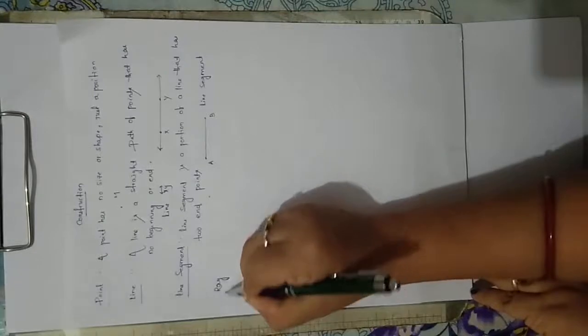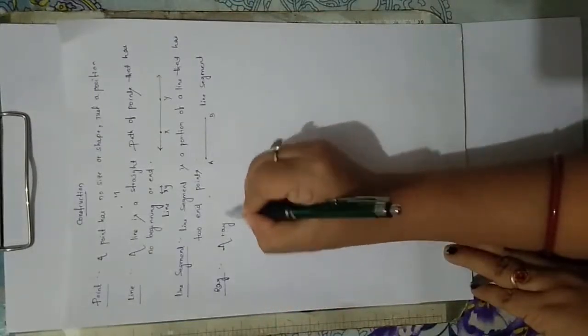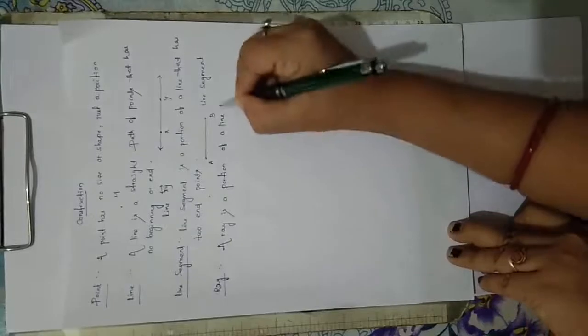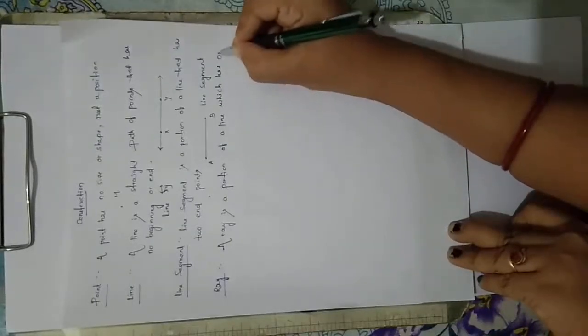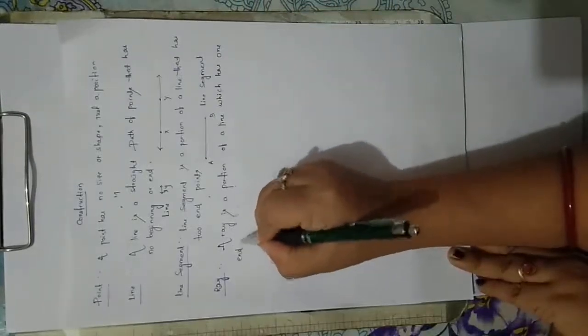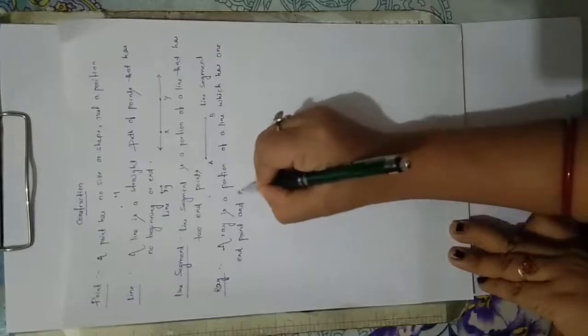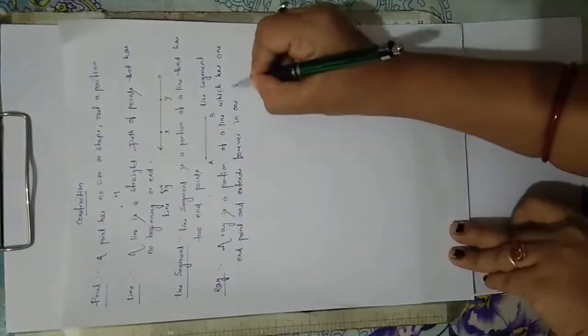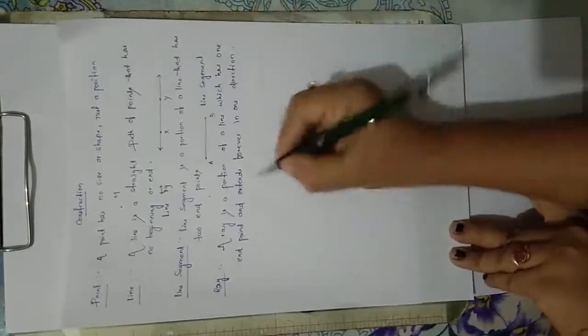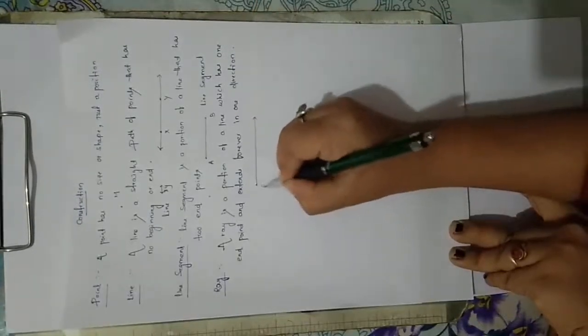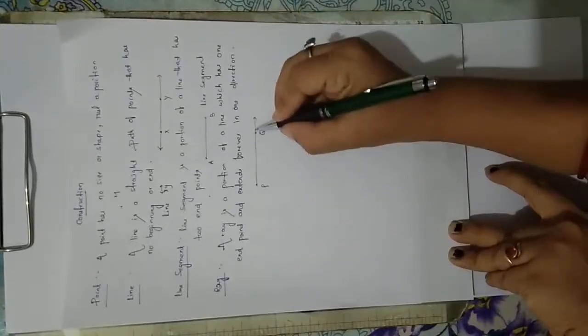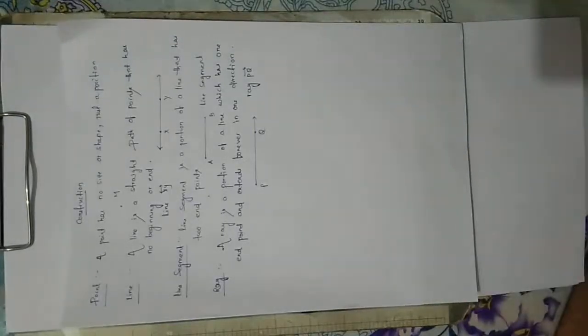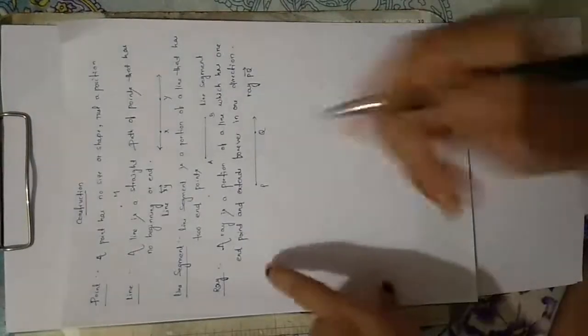After that, ray. Ray is a portion of a line which has one endpoint and extends forever in one direction. Only in one direction we can extend it. That is called a ray. P and maybe it is named as Q. On the Q side, it can be extended. It is called ray PQ. On Q side, we can give an arrow mark. Here it is nothing but a ray and it can be extended.